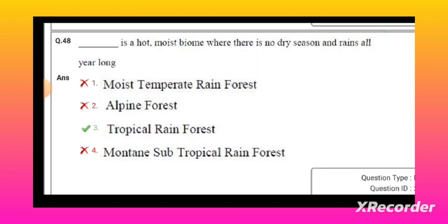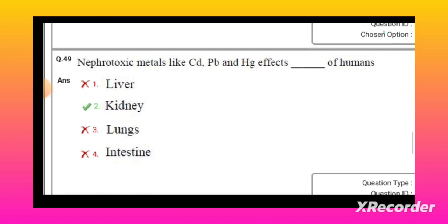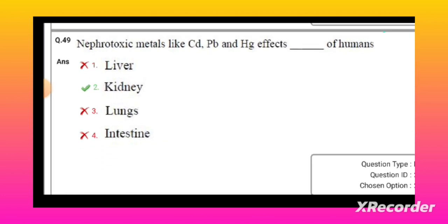Nephrotoxic metals like cadmium, lead, and mercury affect the kidney of humans. The word nephrotoxic itself indicates the kidney.